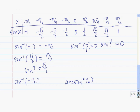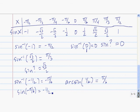Let me give you a couple to try — press pause while you work on these. The arc sine of negative 1 half is negative pi over 6, since the sine of negative pi over 6 equals negative 1 half. Similarly, the arc sine — the inverse sine — of 1 half is equal to pi over 6, since the sine of pi over 6 equals 1 half.